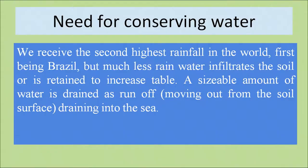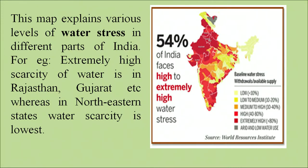Need for conserving water. India receives the second highest rainfall in the world — first being Brazil — but much less water infiltrates the soil or is re-entered into our water table. A sizeable amount of water is drained as runoff, moving out from the soil surface and draining into the sea. The map shows the water stress in different parts of our country. The red parts are those under stress — they have much less water than they require — while yellow and orange show comparatively less stress, such as our northeast areas. High stress zones include states like Gujarat and Rajasthan.